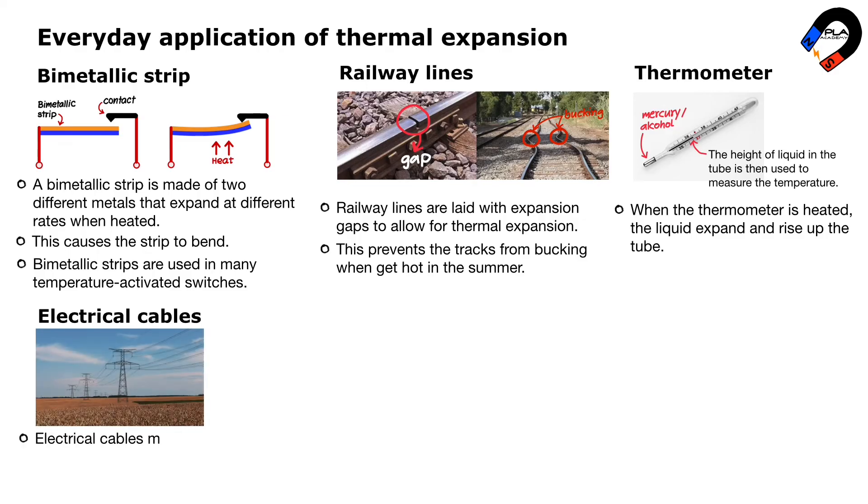Electrical cables must have some slack in them to allow for thermal expansion. This prevents the cables from breaking when they get cold and contract.